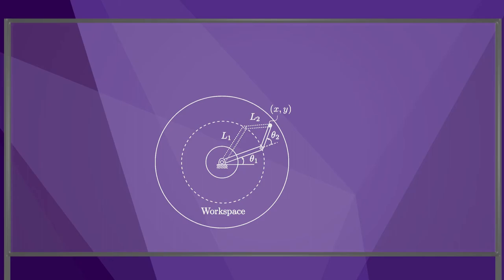For a planar 2R robot, the inverse kinematics problem is to find the joint angles theta1 and theta2 such that the tip of the robot is at the point xy.